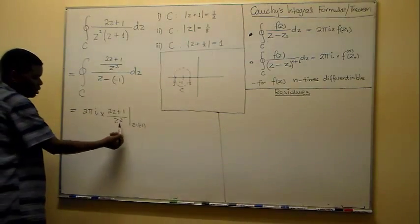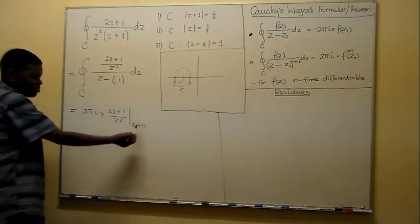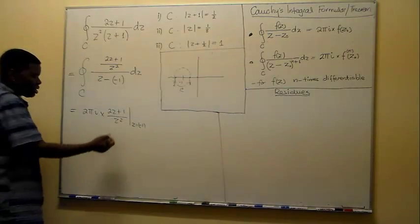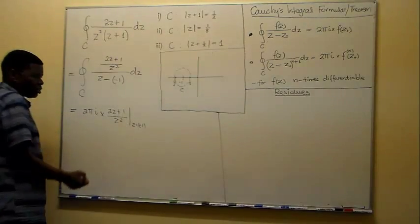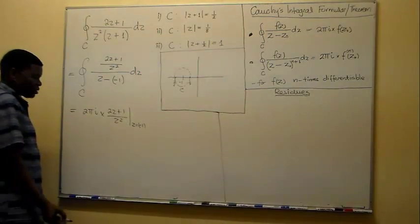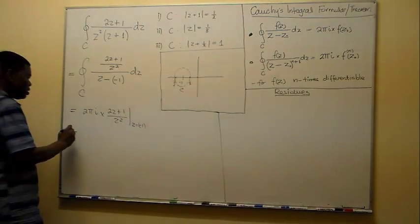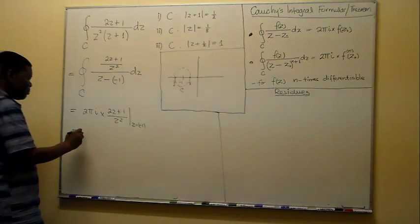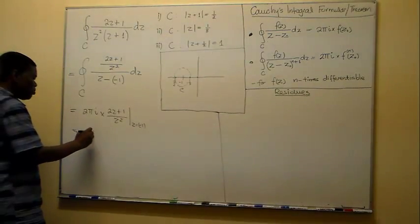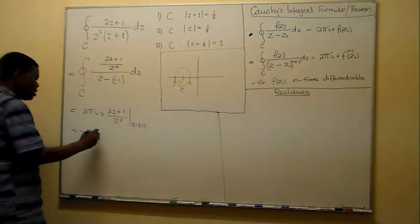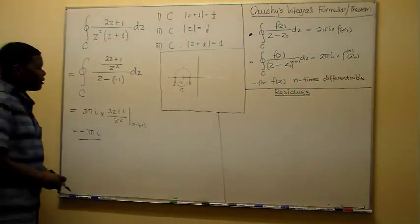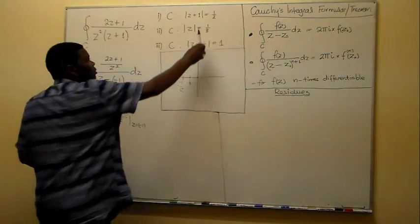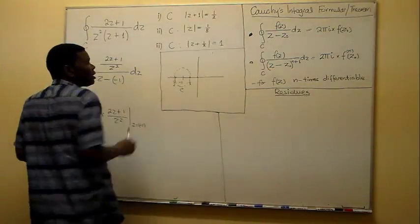What is left now is just to substitute z = minus 1 and simplify. In the denominator we get 1, because it is (minus 1) squared, and in the numerator we get minus 2 plus 1, which is minus 1. This ends up as minus 2πi, which is the answer for the first case.